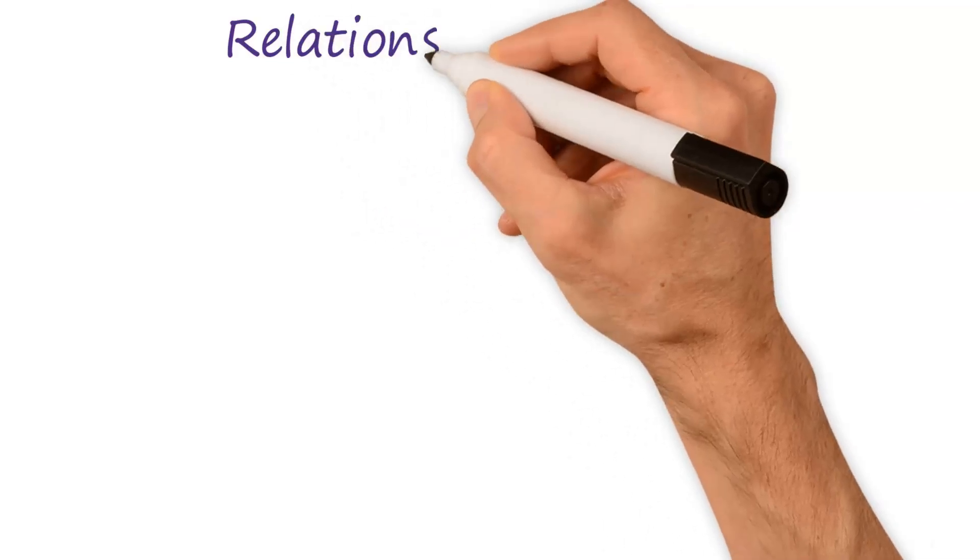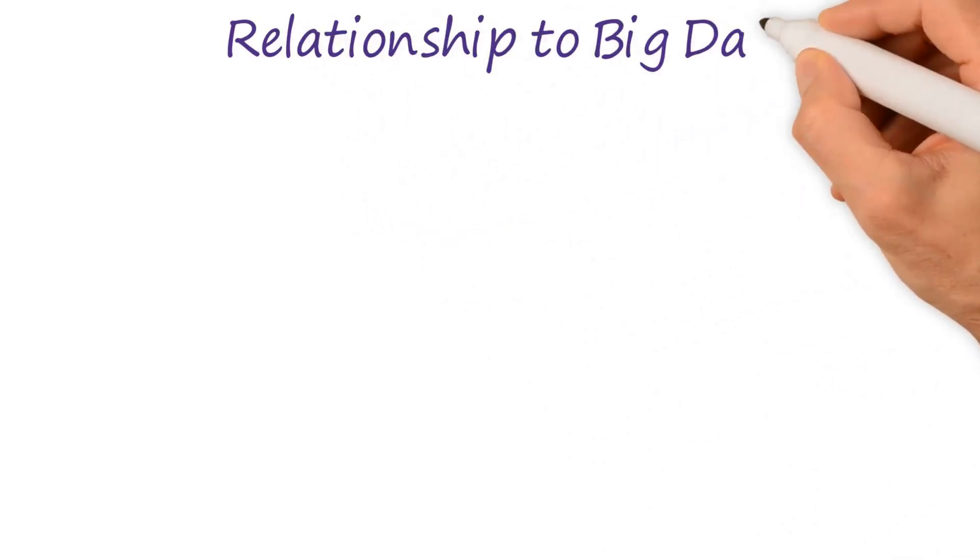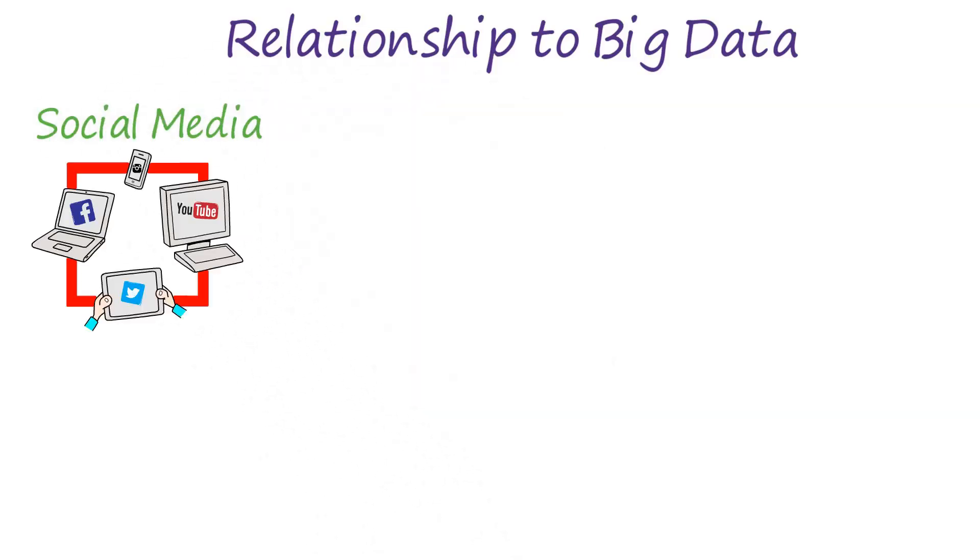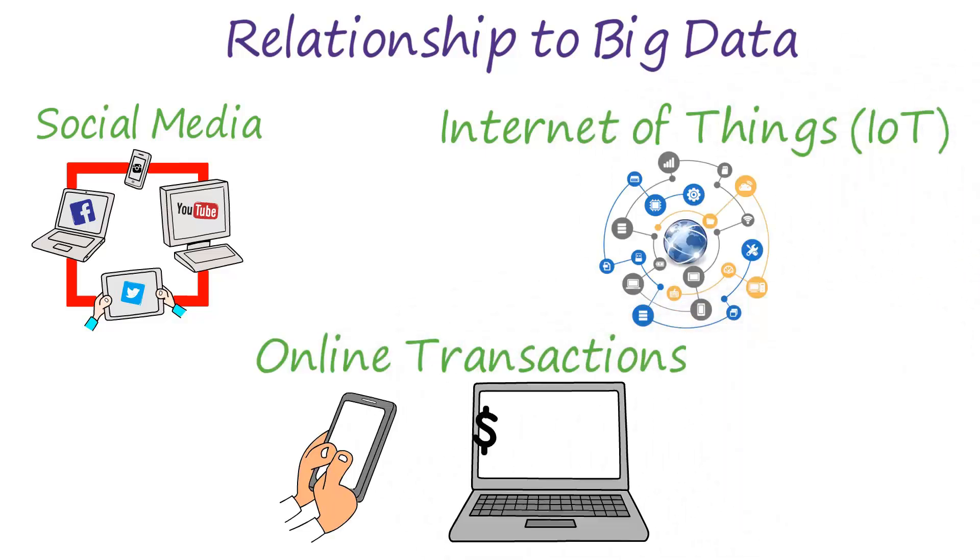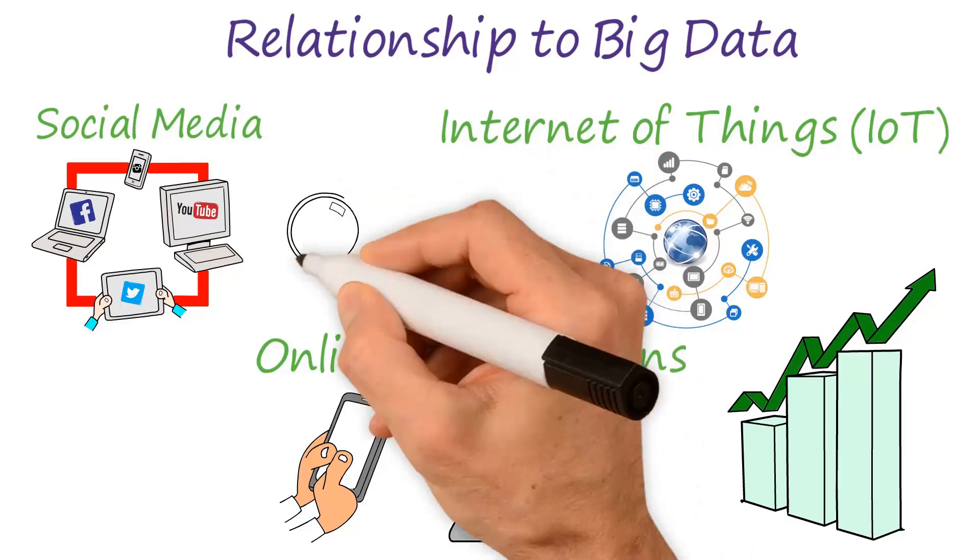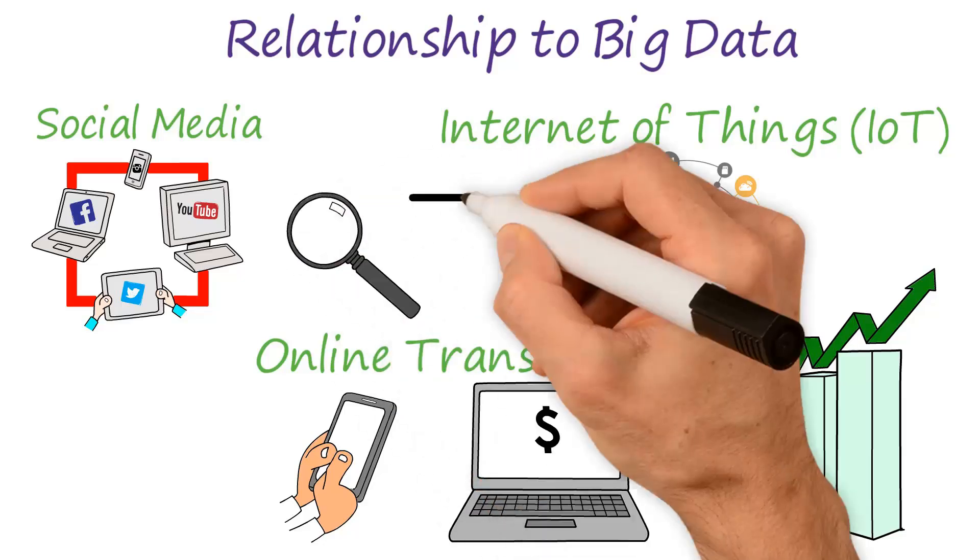Another important aspect of machine learning is its relationship to big data. The vast amounts of data generated by various sources, such as social media, the internet of things (IoT), and online transactions are an essential resource for machine learning algorithms. Machine learning algorithms use this data to train and improve their performance, making them better at making predictions or decisions.